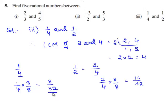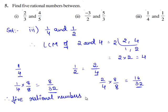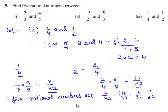So, now we shall write 5 rational numbers between 8 by 32 and 16 by 32. Therefore, the 5 rational numbers are: 9 by 32, 10 by 32, 11 by 32, 12 by 32, and 13 by 32.